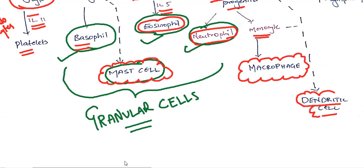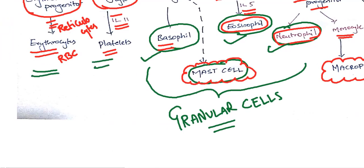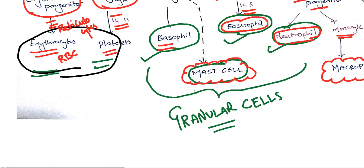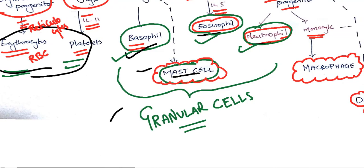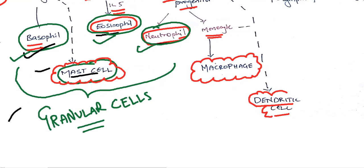All myeloid cells except erythrocytes and platelets perform some innate immunity functions.